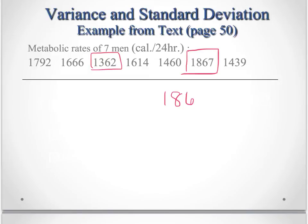And we can see that this data ranges from a minimum of 1362 to a maximum of 1867. So to find the range of this data, we would subtract. We would get 505 kilocalories. So that's the range.